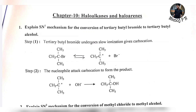First, to explain SN1 mechanism for the conversion of tertiary butyl bromide to tertiary butyl alcohol. SN1 and SN2 are the most important reactions — the most important reactions in terms of examination, as well as KCET, NEET, and KVPY. They are the same from the examination point of view.